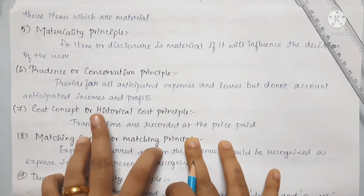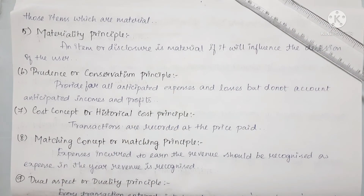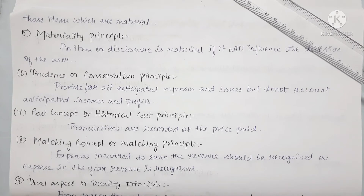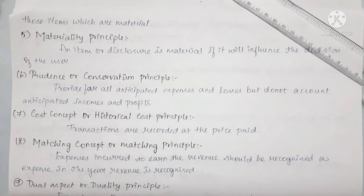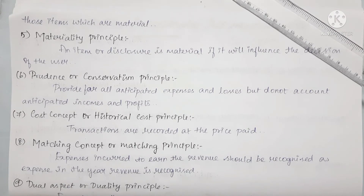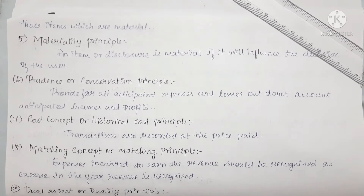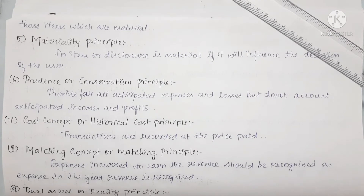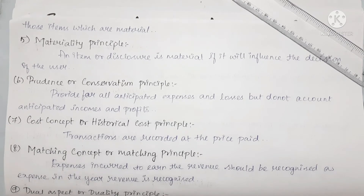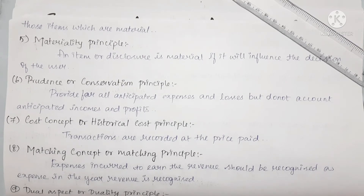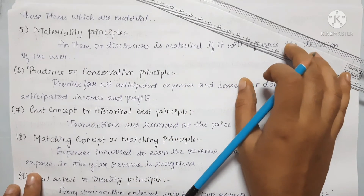Next is the prudence or conservatism principle: provide for all anticipated expenses and losses, but do not account for anticipated income and profit. We record all expenses and all losses, but we do not anticipate profit. As it is said — don't anticipate a profit but provide for all possible losses. This is the accrual concept as well.